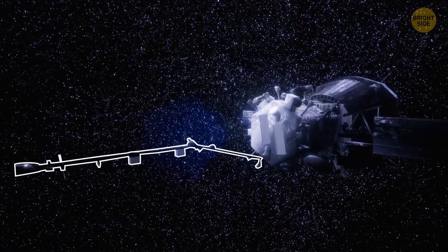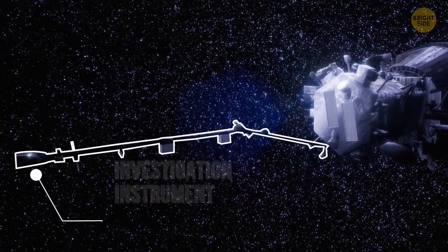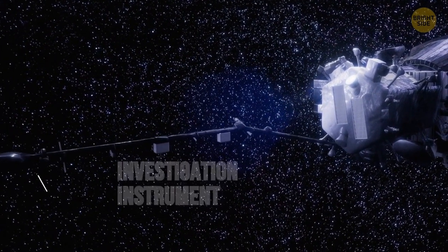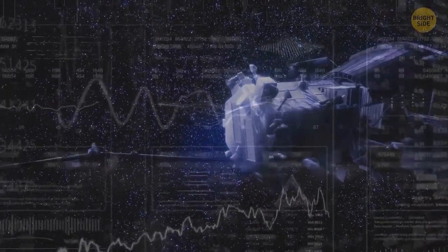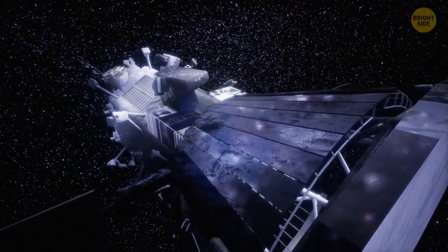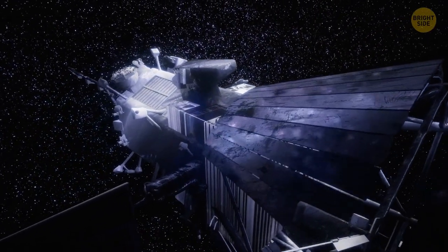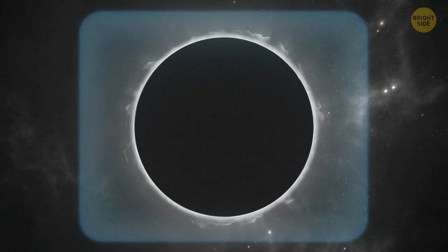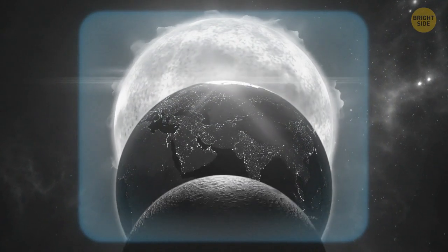The Parker Solar Probe is equipped with the Electromagnetic Fields Investigation Instrument. This is a system for measuring electric and magnetic fields, radio waves, temperature, and plasma density. The Wide Field Imager for the Parker Solar Probe, or WISPR, is an optical telescope, the one that took those stunning images of the moving plasma in the sun's corona. These streamers are what you see during solar eclipses.